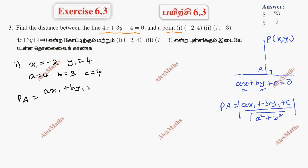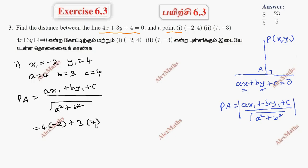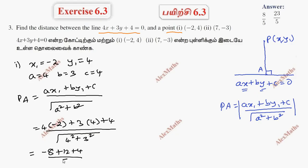So, ax₁ plus by₁ plus c, whole divided by root of a² plus b². Substituting: 4 into minus 2, plus 3 into 4, plus 4, whole divided by root of 4² plus 3². Numerator: minus 8 plus 12 plus 4 equals 8. Denominator: root of 25 equals 5. Total answer is 8 by 5.